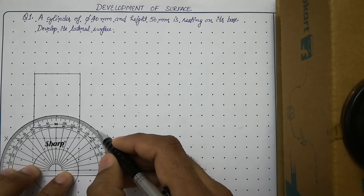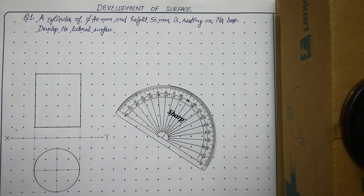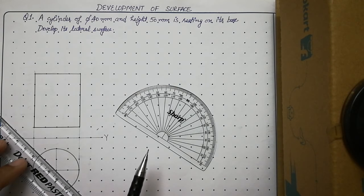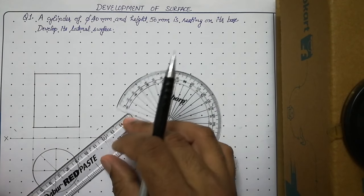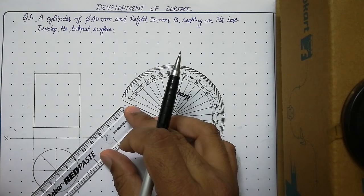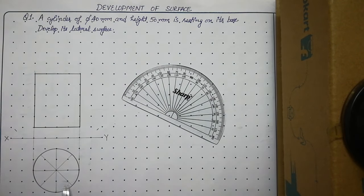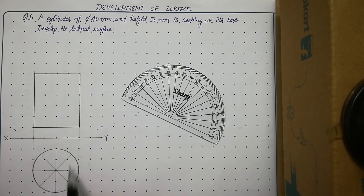Mark 45 degree angles on both sides. Then align your scale with the marking and the center of the circle and draw a thin line inside the circle. Similarly, draw another thin line on the other side. Now we have divided this circle into 8 parts — remember these lines must be continuous thin. We call these as generators.